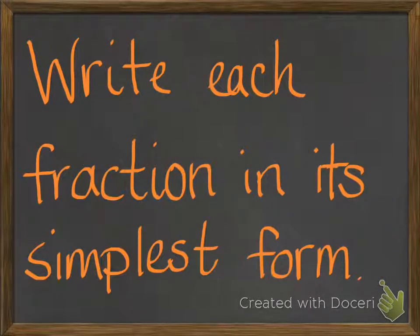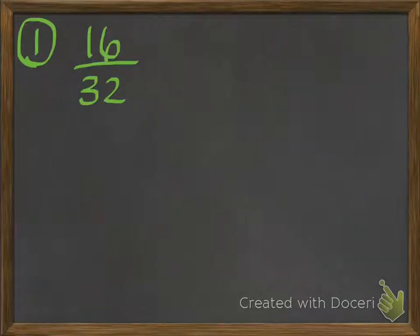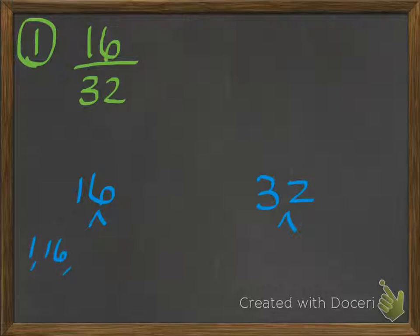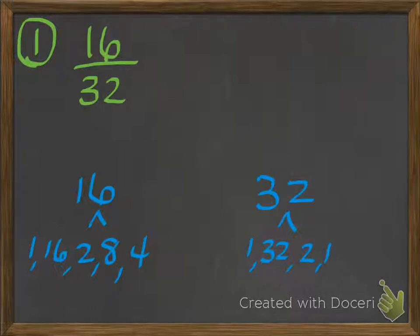Let's practice a few. Write each fraction in its simplest form. 16 thirty-seconds. You need to think of all the factors that go into 16 and all the factors that go into 32. I know 1 times 16 equals 16, 2 times 8 equals 16, and 4 times 4 equals 16. In 32: 1 times 32 is 32, 2 times 16 is 32, and 4 times 8 is 32. I believe those are the only factors of 32.